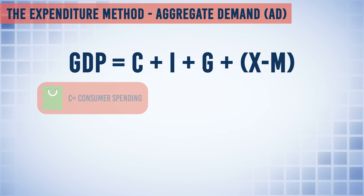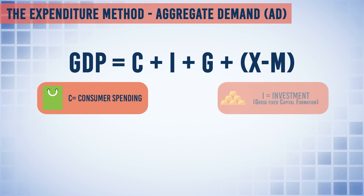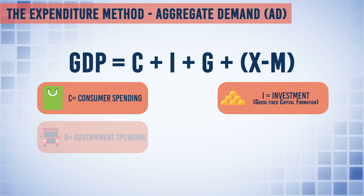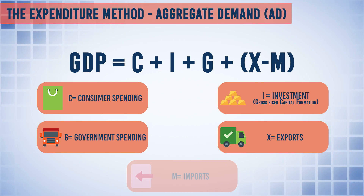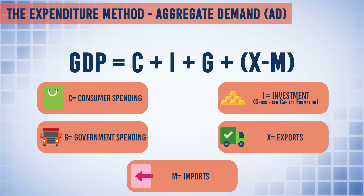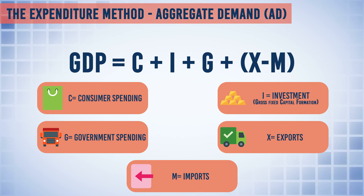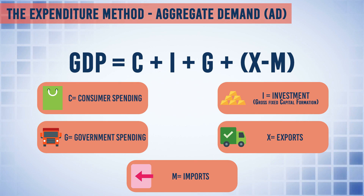To expand this: C is consumer spending, I is investment, G is government spending, X stands for exports, and M stands for imports. So it is like summing up consumer spending, investments, government spending, and exports, and then subtracting imports from that value to give you the GDP of a particular year. All these values have to be taken from the same period for which you want the GDP value.